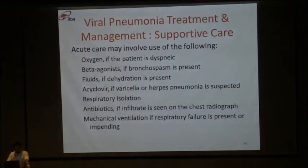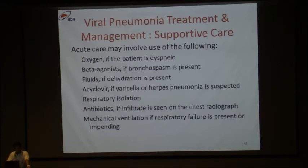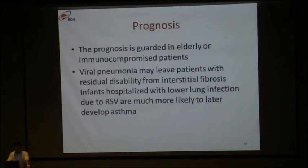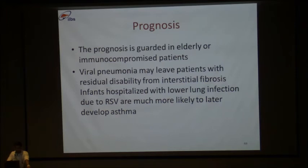The general management of viral pneumonia is supportive. Acute care may involve oxygen if patient is dyspneic, beta-agonist nebulization — levosalbutamol three to four times a day — fluids for dehydration, antibiotics for secondary infections, and mechanical ventilation if patient progresses to respiratory failure. The prognosis is guarded in elderly and immunocompromised patients. In one prior study from our institute, ICU mortality was up to 80%. Viral pneumonia may leave patients with residual disability such as interstitial fibrosis. Infants hospitalized with lower lung function due to RSV are much more likely to later develop asthma.